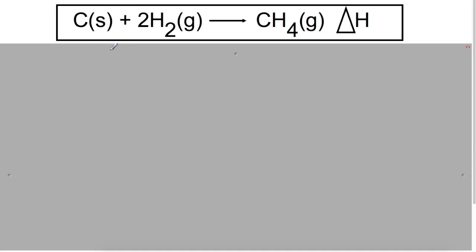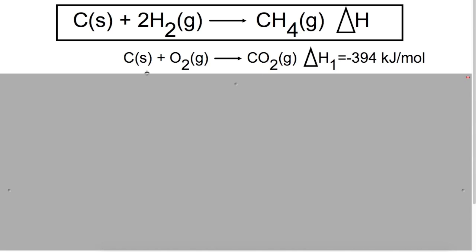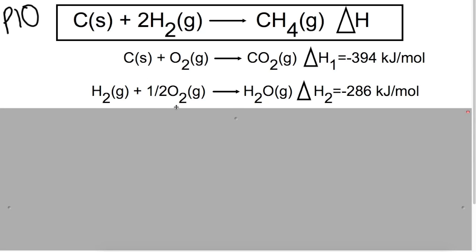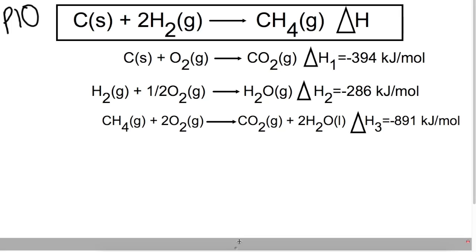What we can do with Hess's Law is take each of our individual reactants and products and write a combustion equation for them. Combustion reactions do happen and we can measure their enthalpy changes. So the combustion equation for carbon is where we completely combust one mole of carbon in oxygen to give us carbon dioxide, with delta H1 of minus 394 kJ/mol. You can find these enthalpy changes on page 10 of your data book under enthalpy of combustion. The combustion of hydrogen gives one mole of hydrogen plus half a mole of oxygen to give one mole of water, with an enthalpy change of minus 286. And the combustion of methane is one mole of methane plus two moles of oxygen to give carbon dioxide and water, with delta H of minus 891.